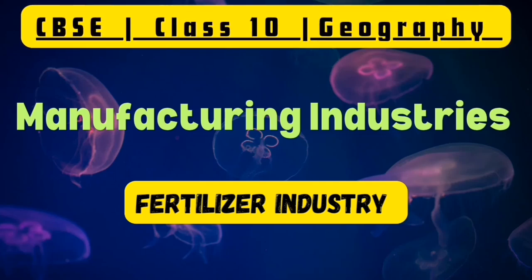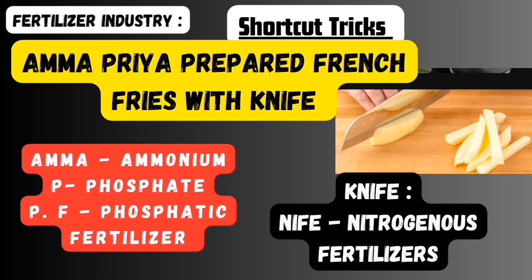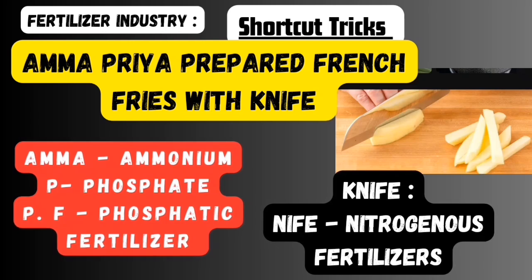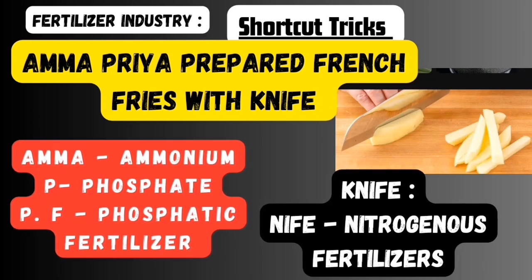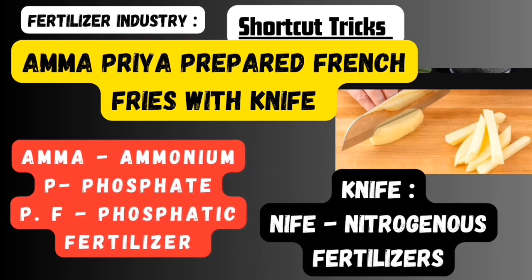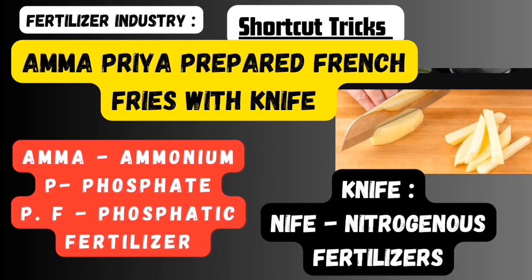The first shortcut is: Amma Priya prepared french fries with knife. Amma is a Tamil word meaning mother in English. Here, 'amm' refers to ammonium, then 'Priya' — the first letter P refers to phosphate, so ammonium phosphate. Then 'prepared' — the first letter P also refers to phosphate, and 'french' — F refers to fertilizer.